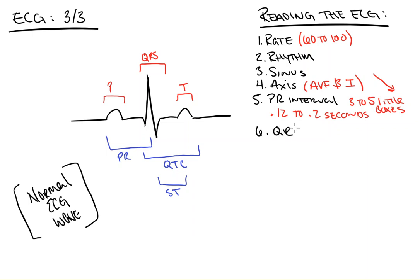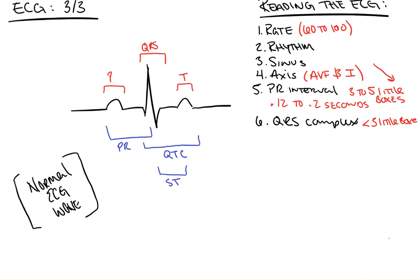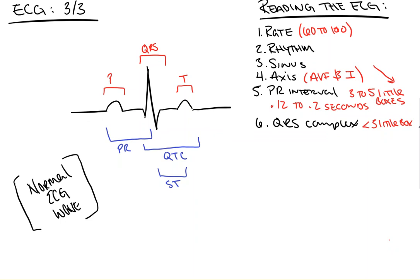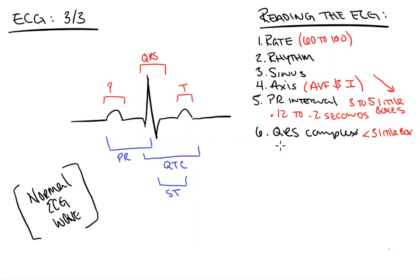Next, I look at the QRS complex, mainly at its width. A normal QRS complex is less than 3 little boxes or it's less than 0.12 seconds. Wide QRS complexes may be indicative of various pathologies, such as perioperative electrolyte abnormalities that can have intraoperative repercussions and should be addressed prior to going to the operating room.